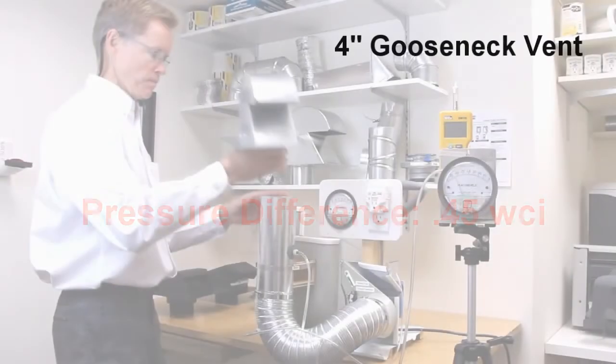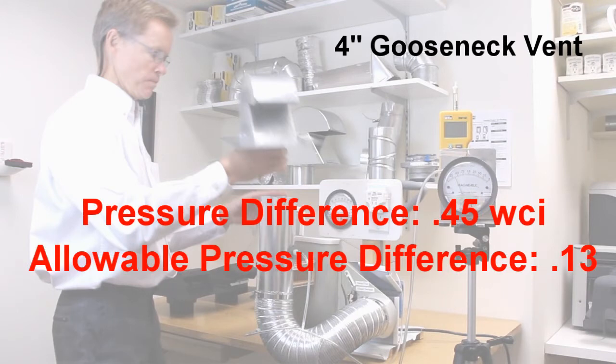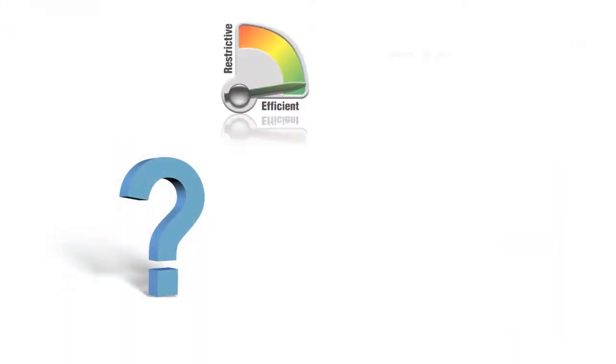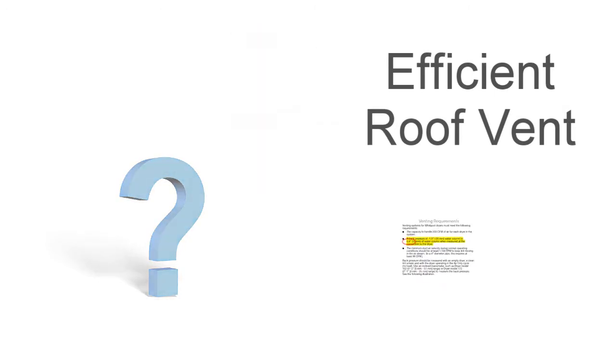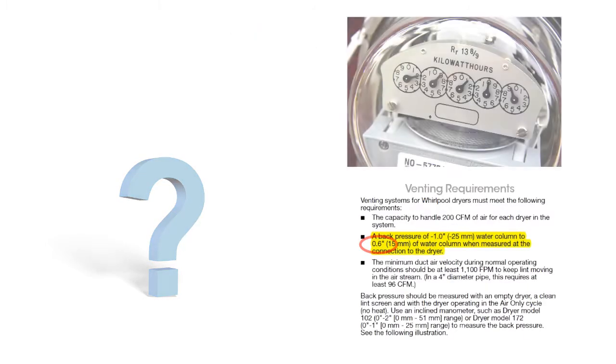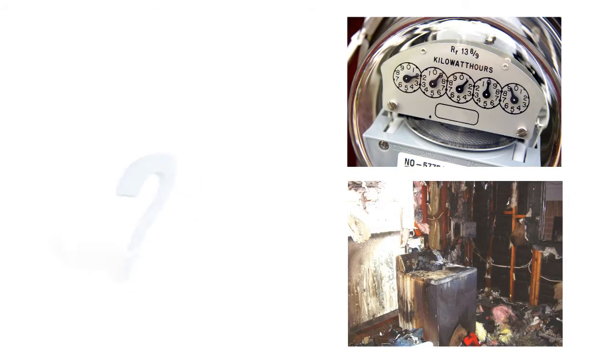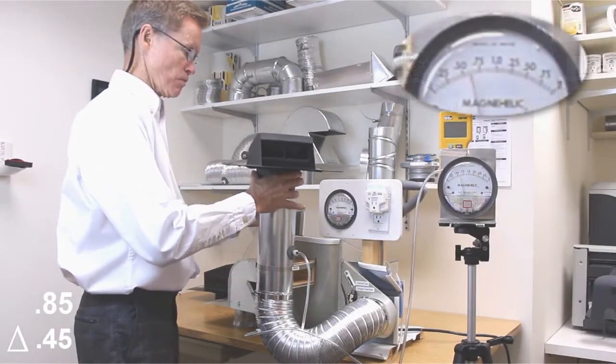In our first test, the four-inch gooseneck provided more than three times the allowable pressure level, and it's here we start to see why an efficient roof vent becomes attractive in not only meeting the appliance manufacturer's minimum requirements, but saving energy and minimizing any fire risk. Let's continue with the test.